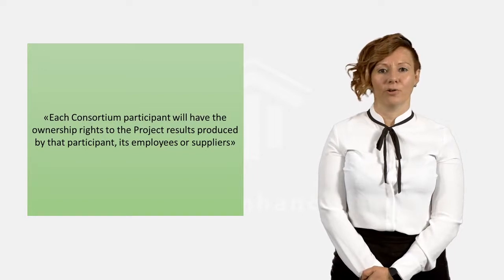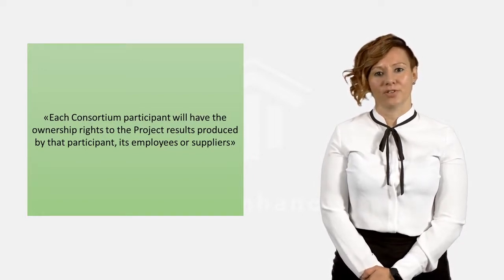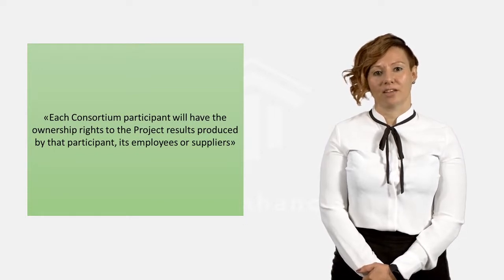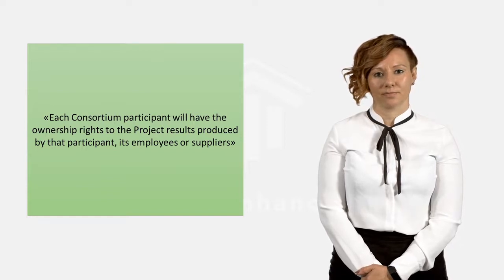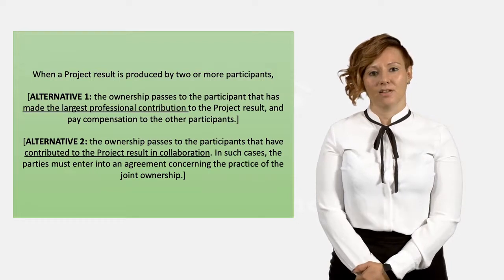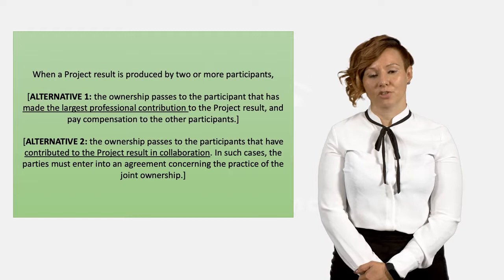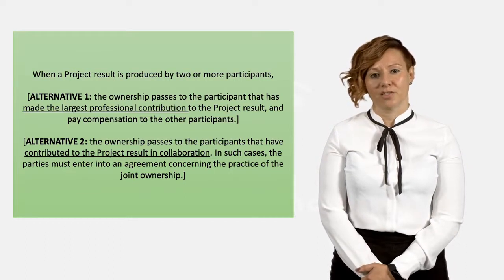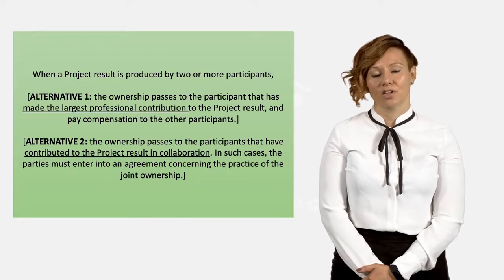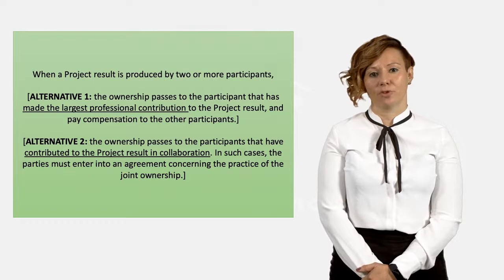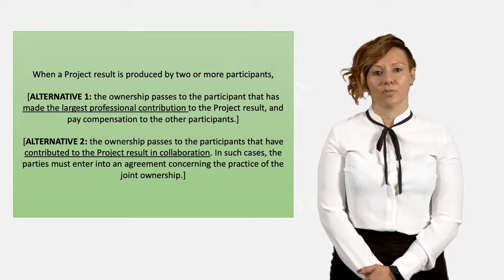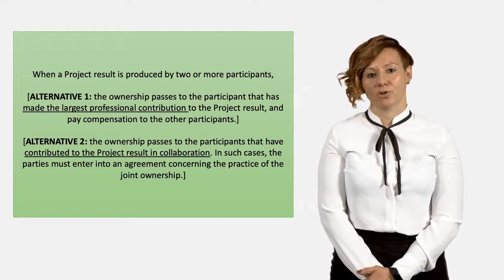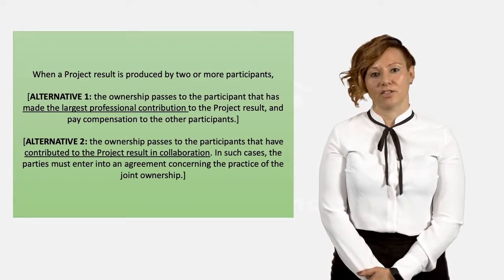This is a typical provision regarding ownership of results. It states that each consortium participant will have the ownership rights to the project results produced by that participant, its employees, or suppliers. This is non-problematic if it is easy to decide who has produced the results. The challenge is when several participants have contributed to the project results. In this example the agreement gives you the choice of two options: the first passes ownership to the participant that has made the largest professional contribution to the results, while the other passes ownership to the participants that have contributed to the project result in collaboration — i.e., joint ownership. Both alternatives leave the discussion of ownership to a later stage, and in both options it is necessary to enter into a new agreement.